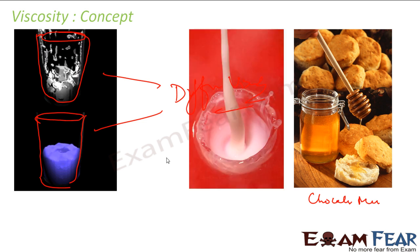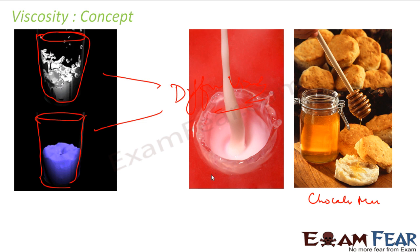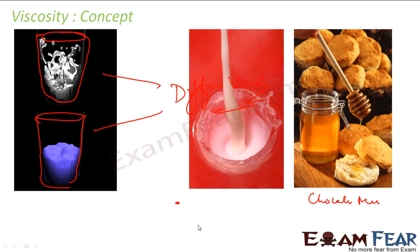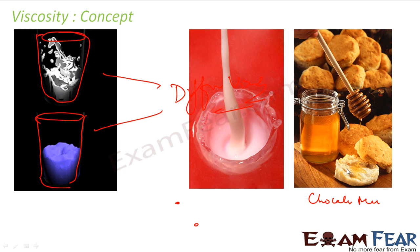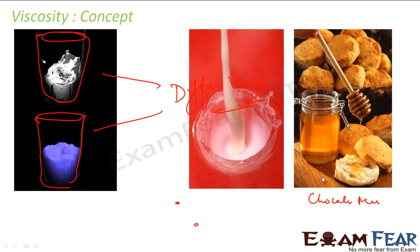Milk also splashes out a little when you pour it. But honey poured from one point to another won't splash out at all — it'll just flow slowly. Different matter has different viscosity.